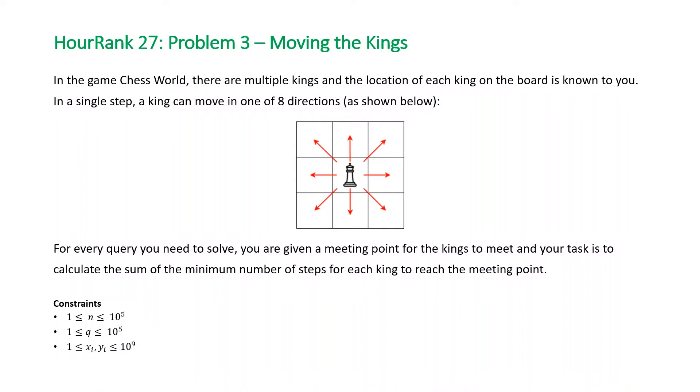The question states, in the game chess world there are multiple kings and the location of each king on the board is known to you. In a single step a king can move in one of 8 directions as shown below. For every query you need to solve, you are given a meeting point for the kings to meet and your task is to calculate the sum of the minimum number of steps for each king to reach the meeting point.